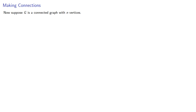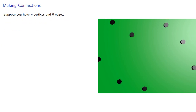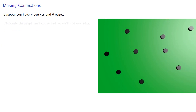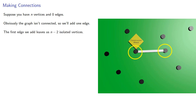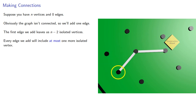Now suppose g is a connected graph with n vertices — what's the fewest number of edges it can have? A useful strategy in math and in life: if you build it, they will come. Suppose you have n vertices and 0 edges. Obviously the graph isn't connected, so we'll add one edge. Since this edge joins two isolated vertices, the first edge we add leaves us n-2 isolated vertices. So we'll try and connect the other vertices by adding edges, and every edge we add will include, at most, one more isolated vertex.